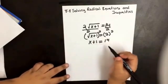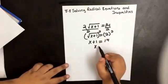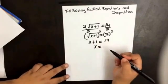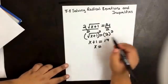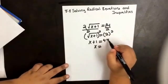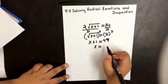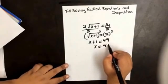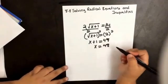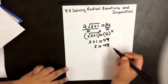Now we want to isolate our x. 7 squared is 49, so then x equals 48. So that would be our answer.